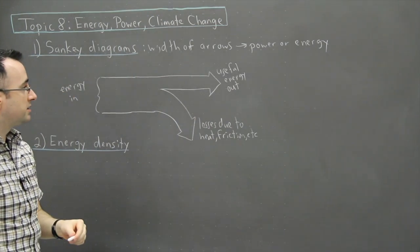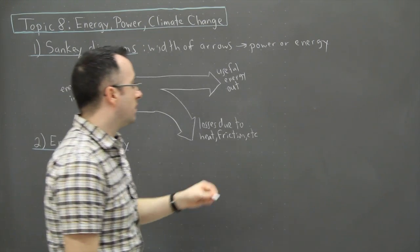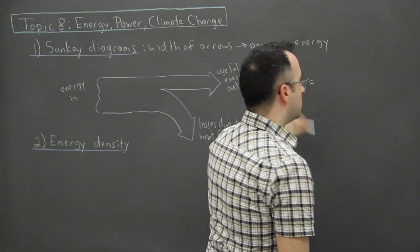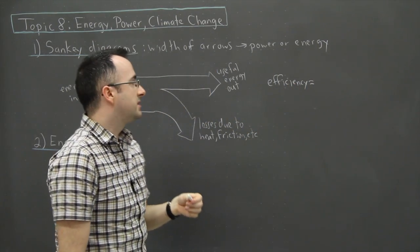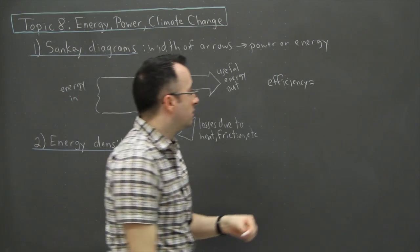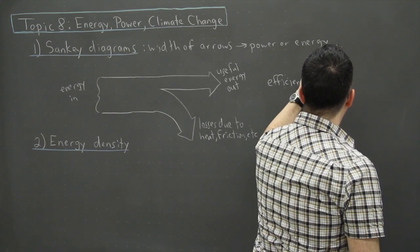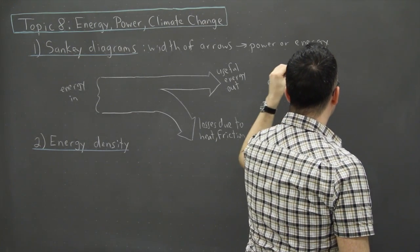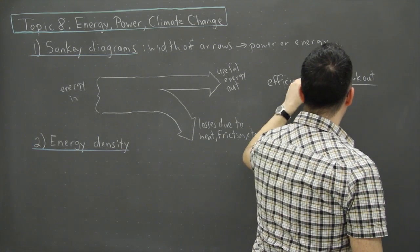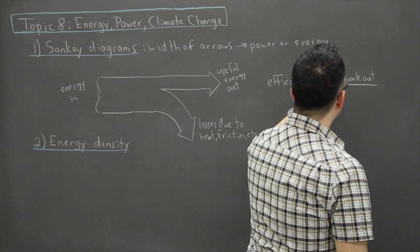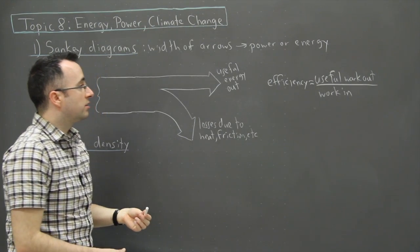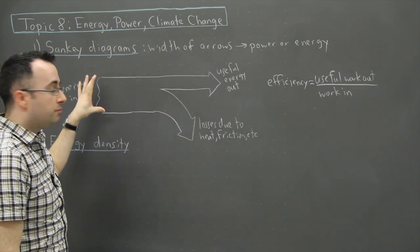And if that's the case then we can actually write an equation for how efficient things are. And it goes like this. Efficiency equals, and we could say it's the, it's basically what you put in divided by what you get out. Okay, so in other words it's the useful, sorry, it's the other way around. Useful work that you get out and you divide that by the work that you put in. Yeah, it's what you get out divided by what you put in.